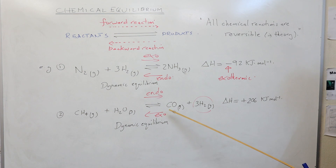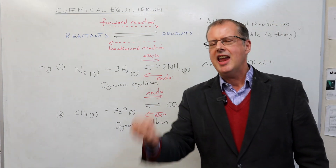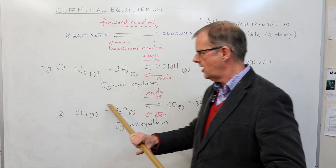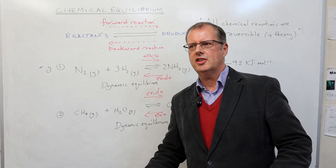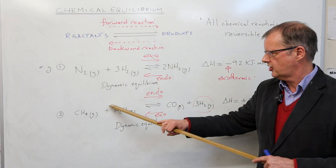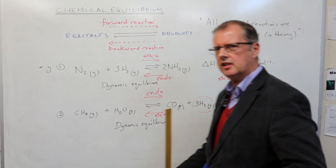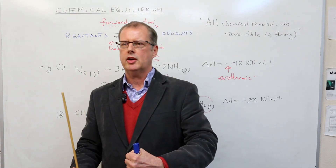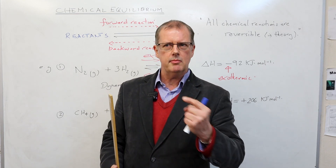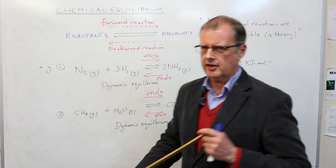Looking at the second reaction, if you heated that system up, heating it favours the endothermic cooling-down direction. So the position of equilibrium shifts to the right — the cooling-down endothermic direction — giving more products and fewer reactants. That's the effect of temperature, and we can manipulate the position of equilibrium. This is vital in industrial chemistry because the better the yield, the better the profit.